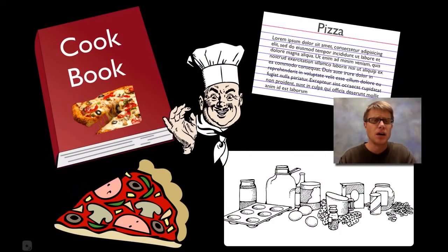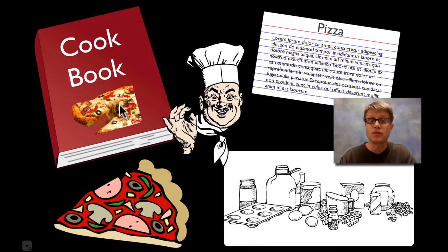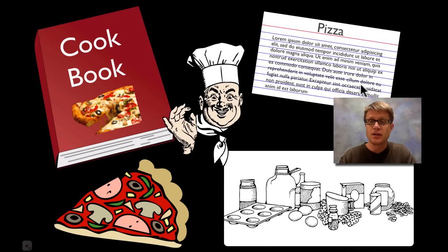And so if we talk about that cooking analogy, basically the cookbook, if we're cooking in the kitchen, is going to contain a bunch of recipes to make a number of different foods. The chef is going to pull the right recipe out, or you could copy it down on a little index card. And then you bring it to the kitchen where you take all these ingredients and then you put them together correctly to make pizza.